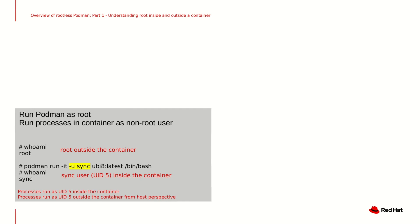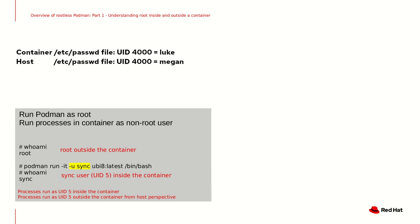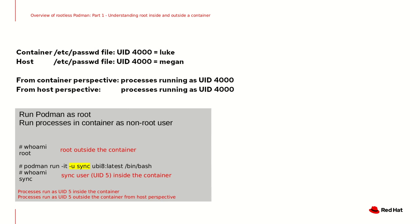One thing to keep in mind is that if UID 5 was assigned to a different user on the host /etc/passwd file, then the processes would appear to be running as whatever user was assigned UID 5 in the host /etc/passwd file. For example, suppose we have a user named Luke with UID 4000 within the container's /etc/passwd file, and the Megan user is UID 4000 in the host /etc/passwd file. The processes running as Luke in the container will be running as UID 4000 both in the container and from the host perspective. However, from within the container they will show as running as the Luke account, and from the host they will show as running as the Megan user account.